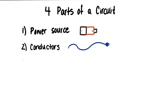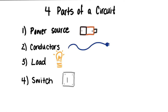Number three is the load, and this is usually a light or a buzzer that's turned on when the circuit is closed. And finally, we have a switch — this is to control when the circuit is open or closed. Remember when I said having an open circuit is also useful? This is so we can turn our circuit off at times. You don't want your light to be on forever — that would be a waste of electricity.